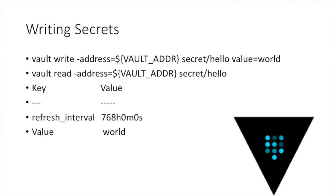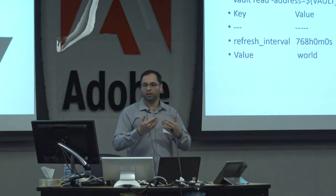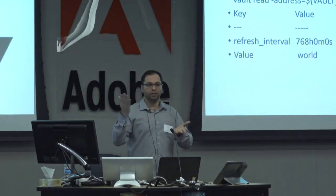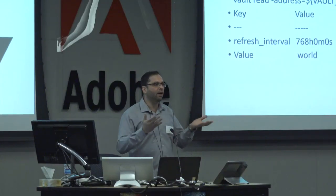So how do you write secrets into Vault? You use the vault command. You could use the command prompt, and Vault also provides a RESTful API too — it's not just command line. You could say: vault write secret/hello with value world. Once it writes it, you can use vault read secret/hello and it would tell you the value. It's a key-value store, basically.